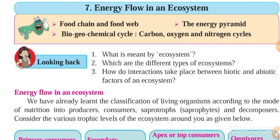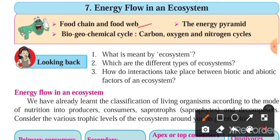Hello dear students, welcome to our Science and Technology Part 2, second lecture for Standard 9, Chapter 7: Energy Flow in an Ecosystem. In this whole chapter, we are going to study food chain and food web, the energy pyramid, biogeochemical cycles, carbon cycle, oxygen cycle, and nitrogen cycles.